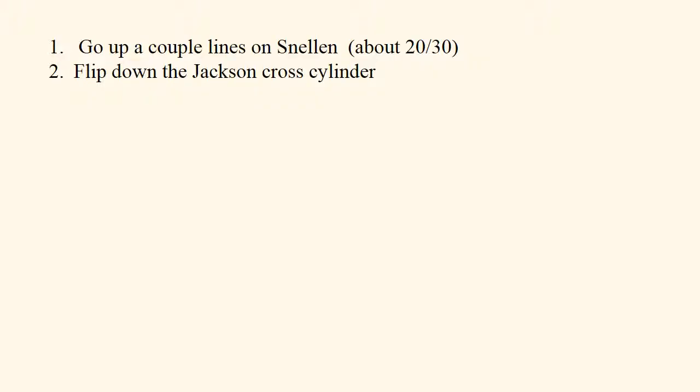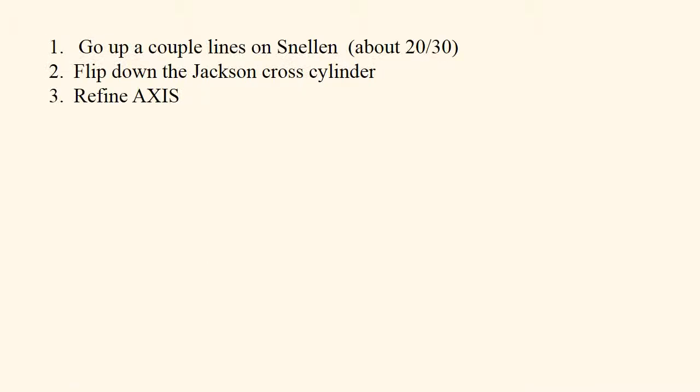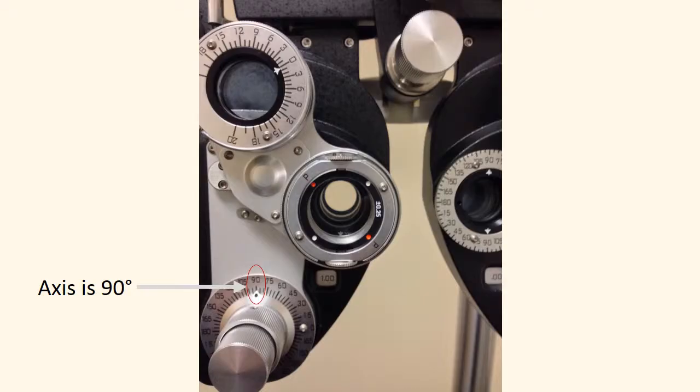Now go ahead and flip down the Jackson Cross Cylinder. Now we're going to refine the axis. The two thumb knobs should line up with the axis. In this case, our patient has a 90 degree axis, so we want our thumb knobs vertical.